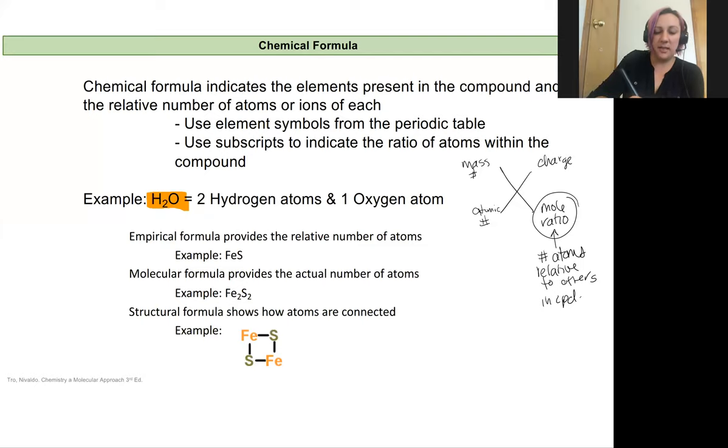When I'm reading this, the H tells me that I have hydrogen atoms in the compound, and the O tells me I have oxygen atoms in the compound. The two tells me that I have two hydrogen atoms for every one oxygen atom, because when I don't have a number following in that lower right-hand corner, we assume that number is one. If I'm writing the element symbol, there's at least one of them in this compound.